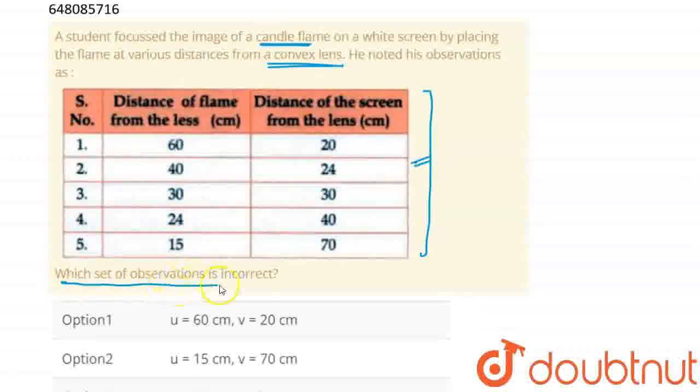Now, which set of observations is incorrect? So, which set of observations is incorrect? If we look at the table, the third observation...